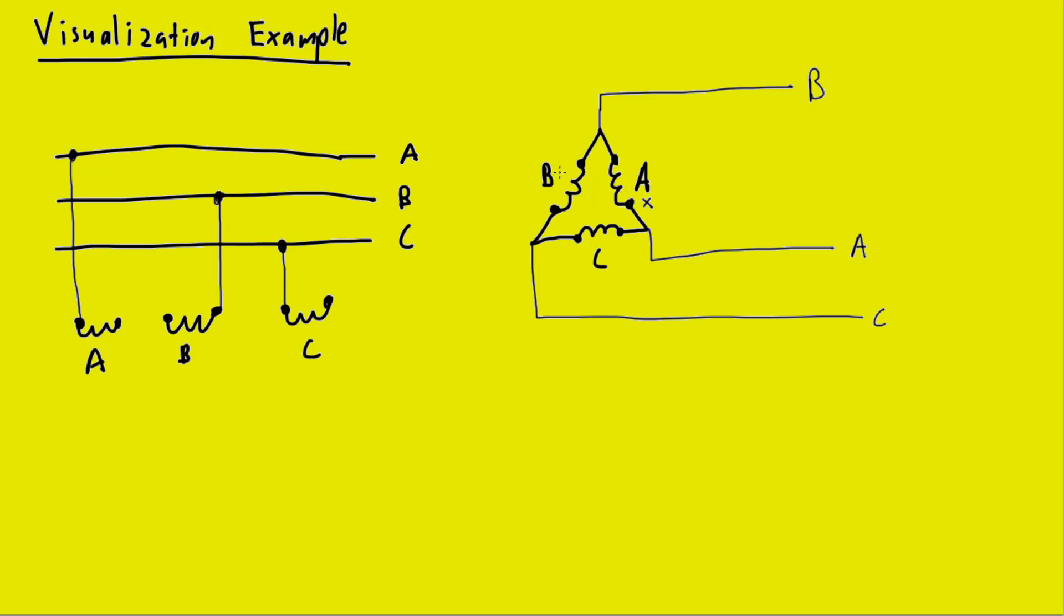That connection is there. C, likewise, goes directly to the C, so that connection has been established. So, now we have the three of the six connections made, both in our horizontal three-line diagram here, and in our actual delta configuration diagram here.